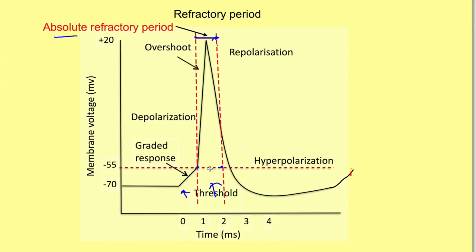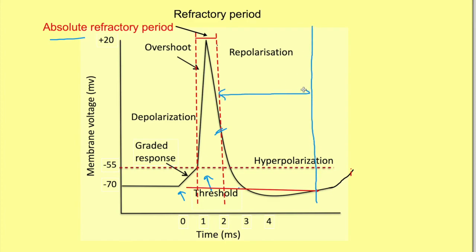The relative refractory period is from the end of the absolute refractory period to the end of the action potential. As the term indicates, the cell is still unresponsive, but relative refractory means it will respond — not to a normal stimulus, but to a higher strength stimulus. We need a suprathreshold stimulus to stimulate an excitable cell during the relative refractory period.